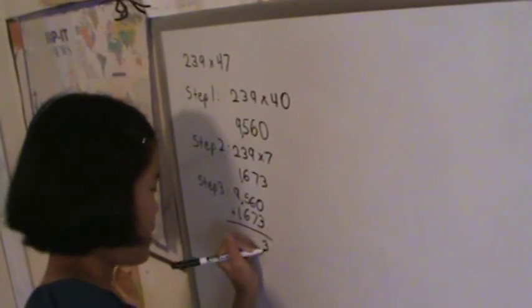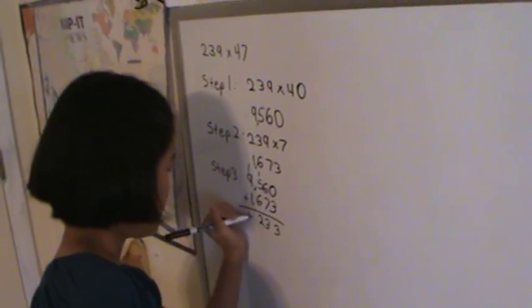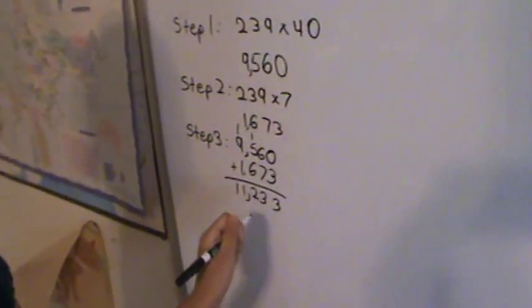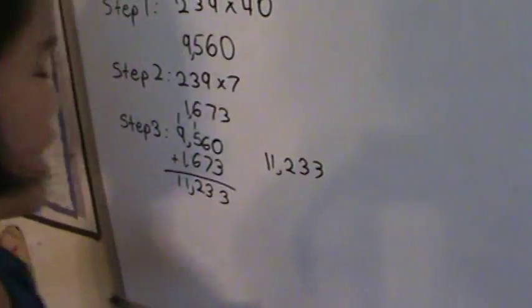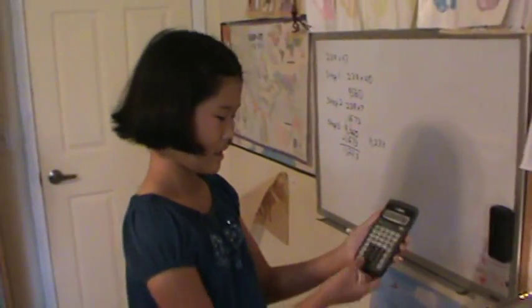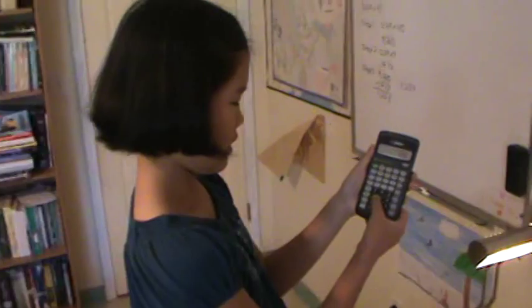And you get 11,233 as your answer. If you wish to check, you can take your calculator and multiply 239 by 47.